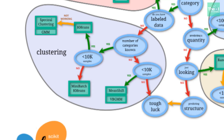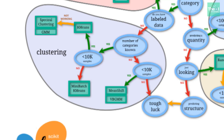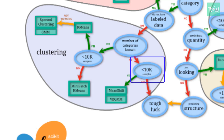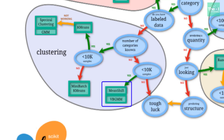Going back to check if the number of categories are known — if the answer is no, meaning we don't know the number of defined categories, we check the number of observations. If less than 10,000, we opt for mean shift or VB-GMM (variational Bayesian Gaussian mixture model). If not less than 10,000, it's pretty difficult to define a model for that business problem.